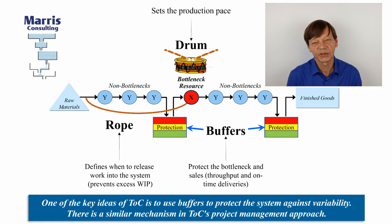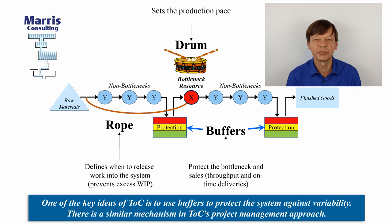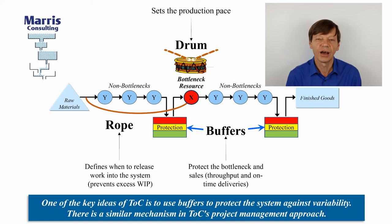If you do that, you have a system with minimum work in progress and maximum sales, but you haven't yet ensured proper due date performance. That's where the second buffer comes in, which is just at the end of the process, and it is there to absorb any problems you might have between the bottleneck and the last operation.